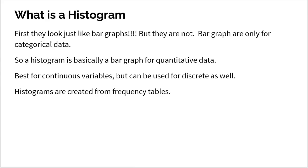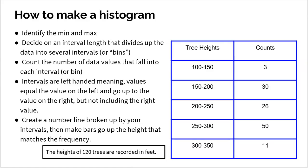Histograms are first created from frequency tables. You typically need to have a frequency table first in order to build a histogram. You need to identify your min and your max, then decide on an interval length that divides the data into several intervals, or bins of data.